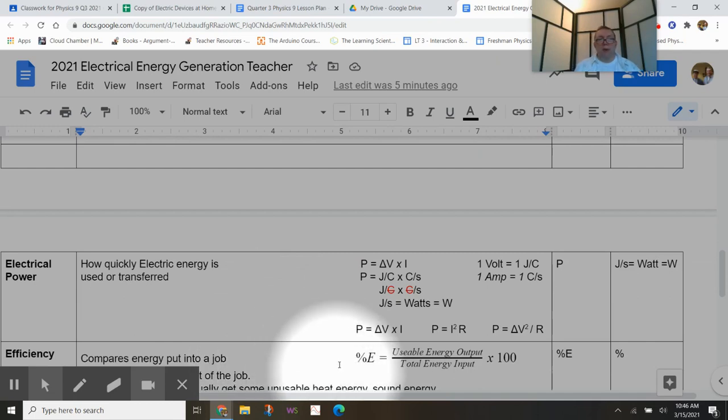And electrical power. Electrical power is how quickly electrical energy is transferred or used. It's not always 100% used for what you would like it to be used for.